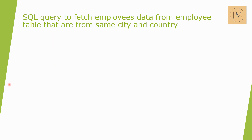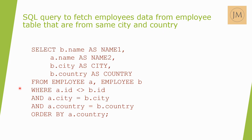Third question: write an SQL query to fetch employee data from an employee table where employees are from the same city and country. We use a self-join — employee with alias A joined with employee with alias B — where A.employee_id is not equal to B.employee_id, and A.city equals B.city and A.country equals B.country, ordered by country.